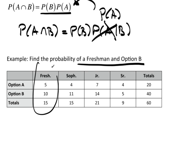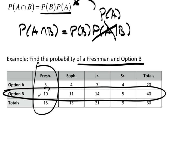So, here's freshman. Here's option B. The and is right there. So, I know the answer is going to be 10 out of 60, which is obviously 1 out of 6. And, I could reduce it to a decimal if I wanted to.